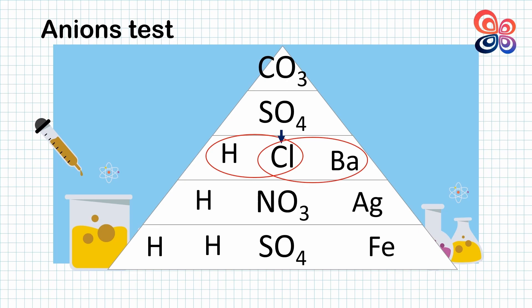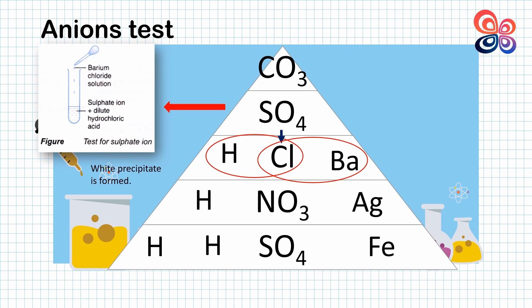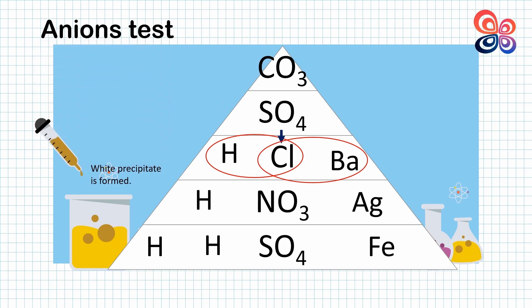Second, add barium chloride to the solution. The result is white precipitate is formed which represents barium sulfate. Barium sulfate is an insoluble salt and forms as white precipitate. The reason why hydrochloric acid is added is to prevent precipitation of barium carbonate.